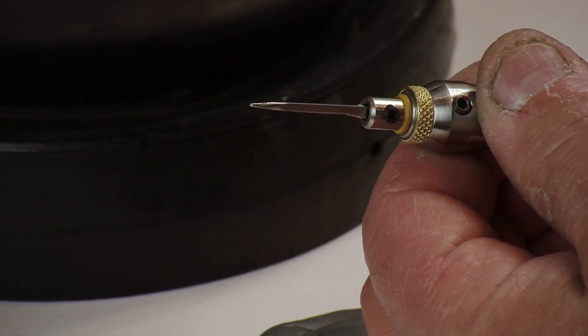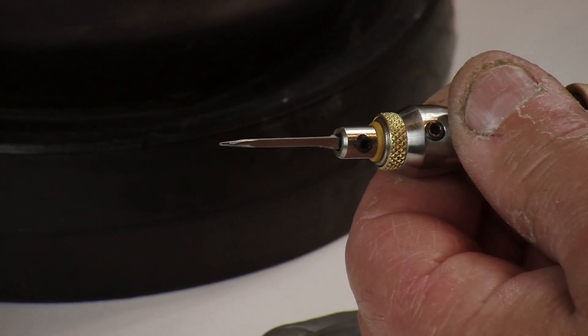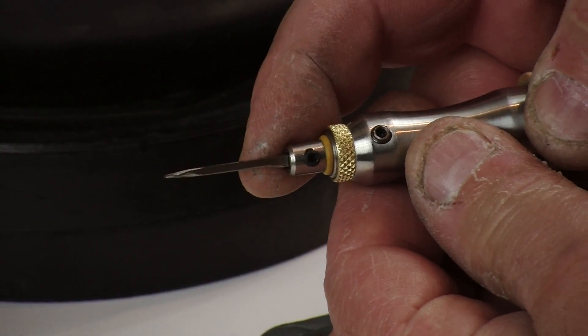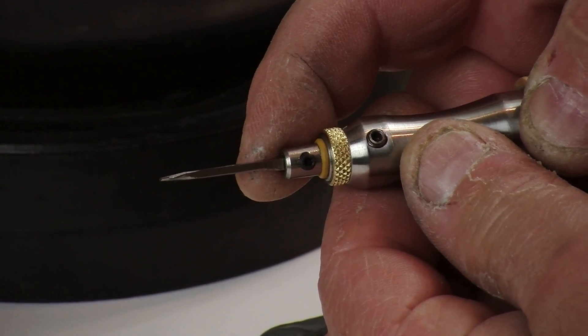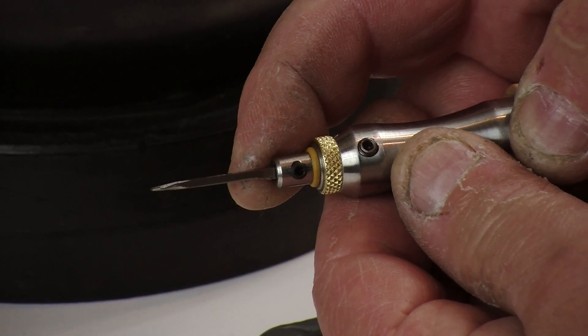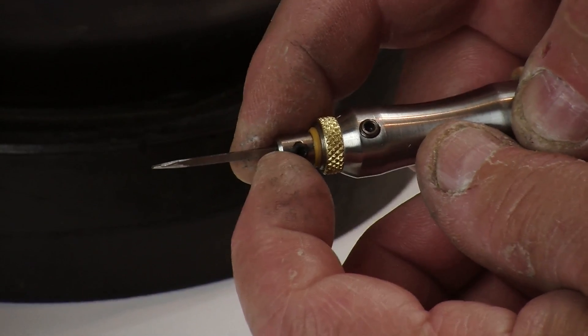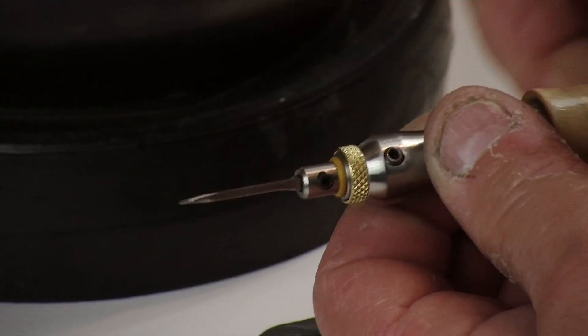You can turn it down even more. If you're doing real fine work, shading and those kinds of things, you may want less pressure. Now that's down to 50 psi, and you can hear it's still striking but not as hard as at higher pressure.